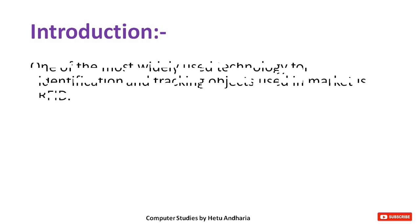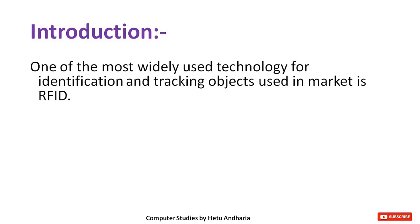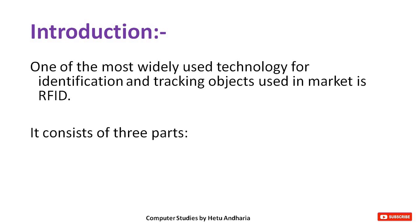One of the most commonly used technologies for identification and tracking of objects used in the market is RFID. RFID is not only used in FASTag but in so many things. It consists of three parts: antenna, trans receiver, and transponder.